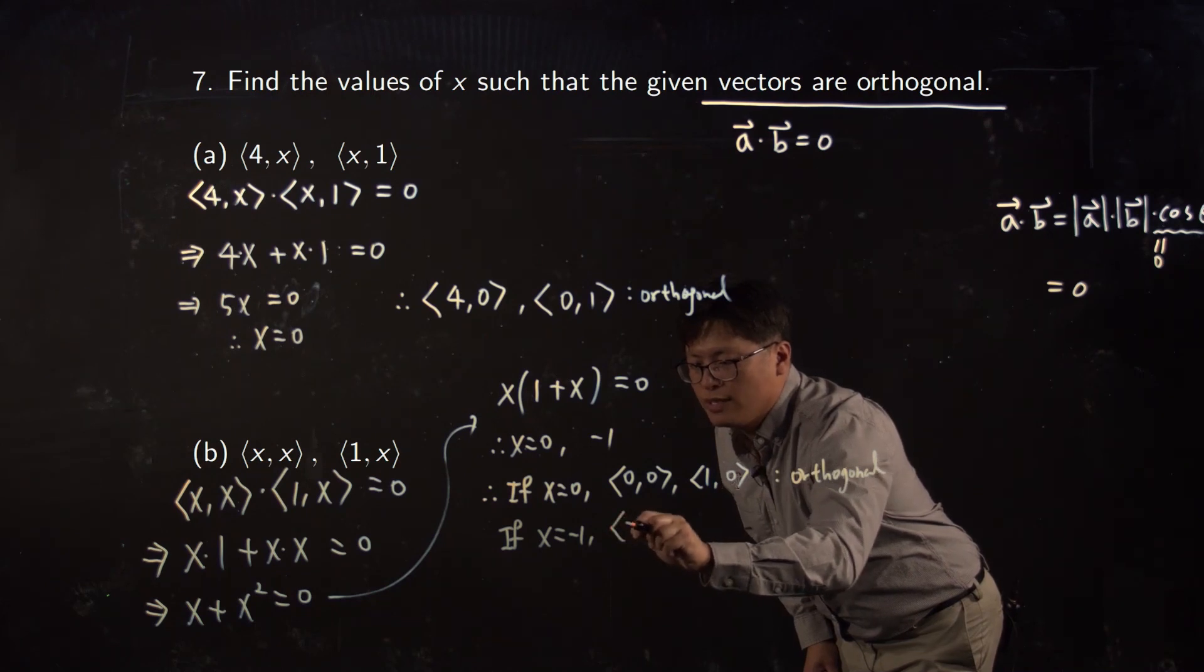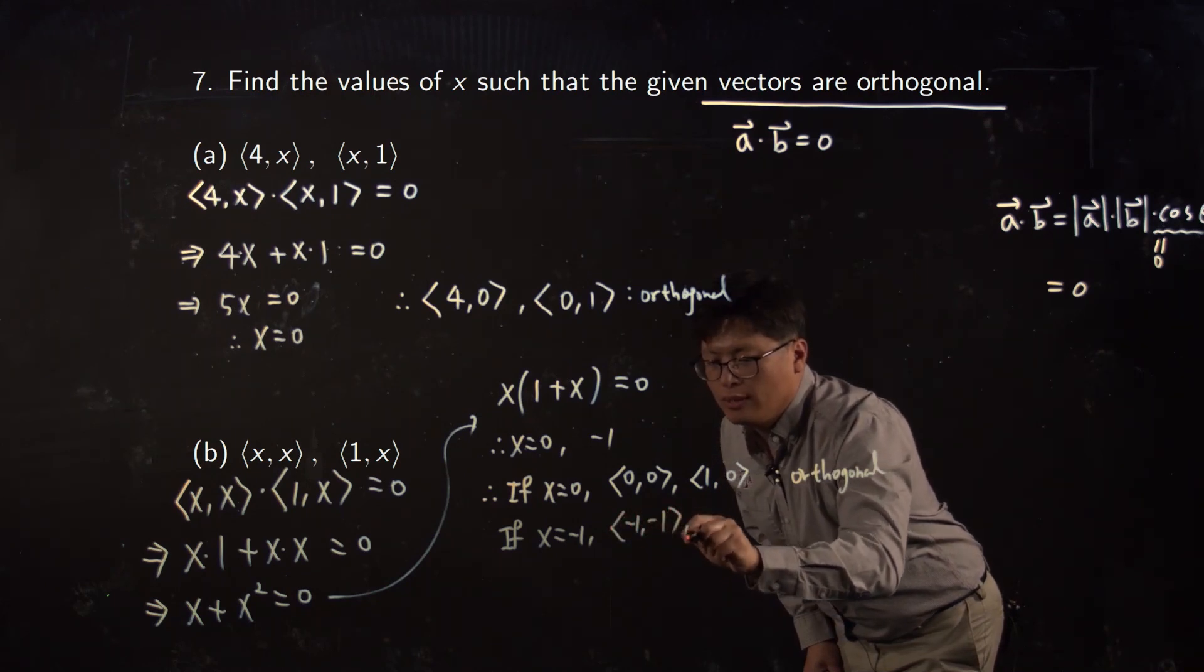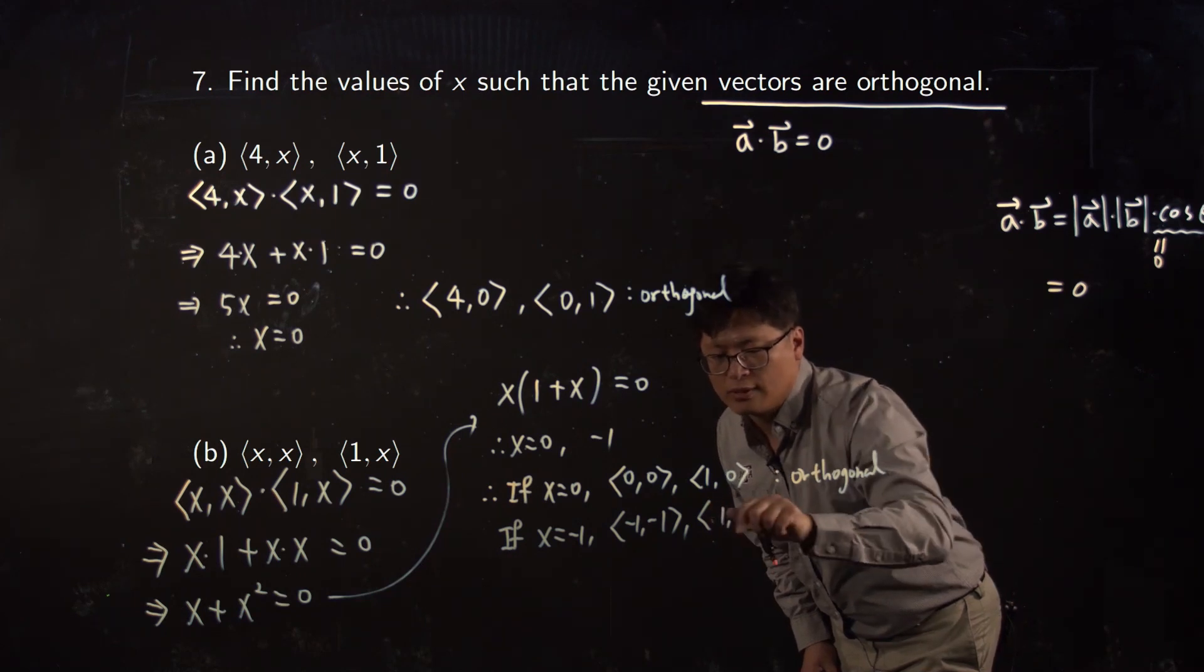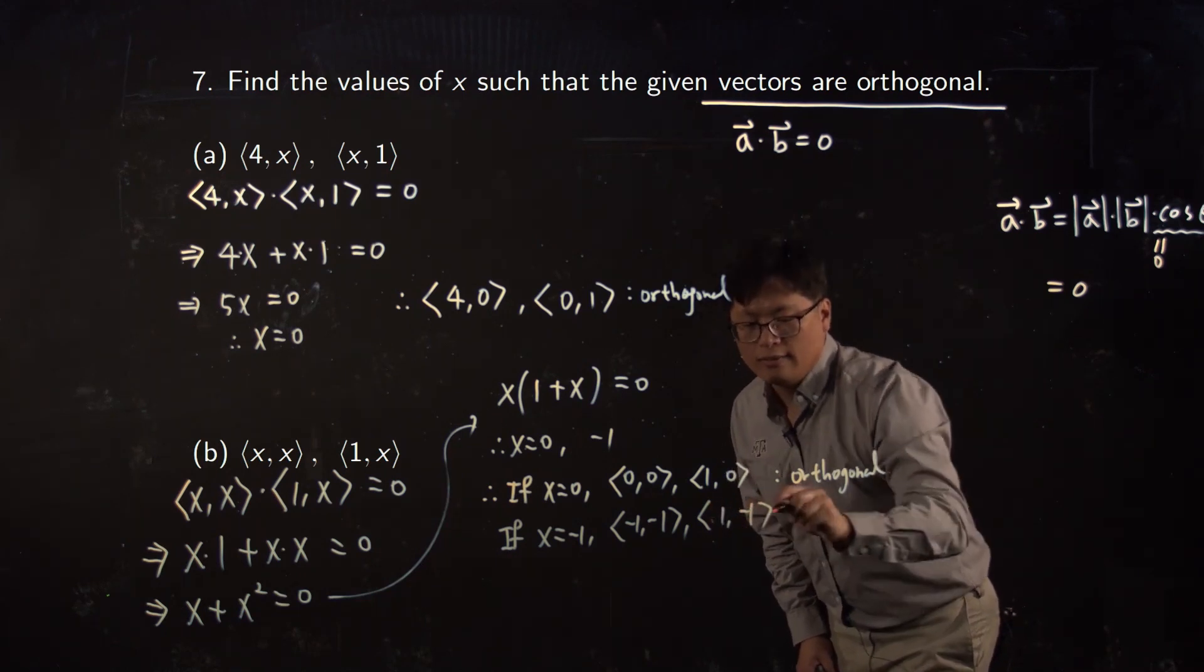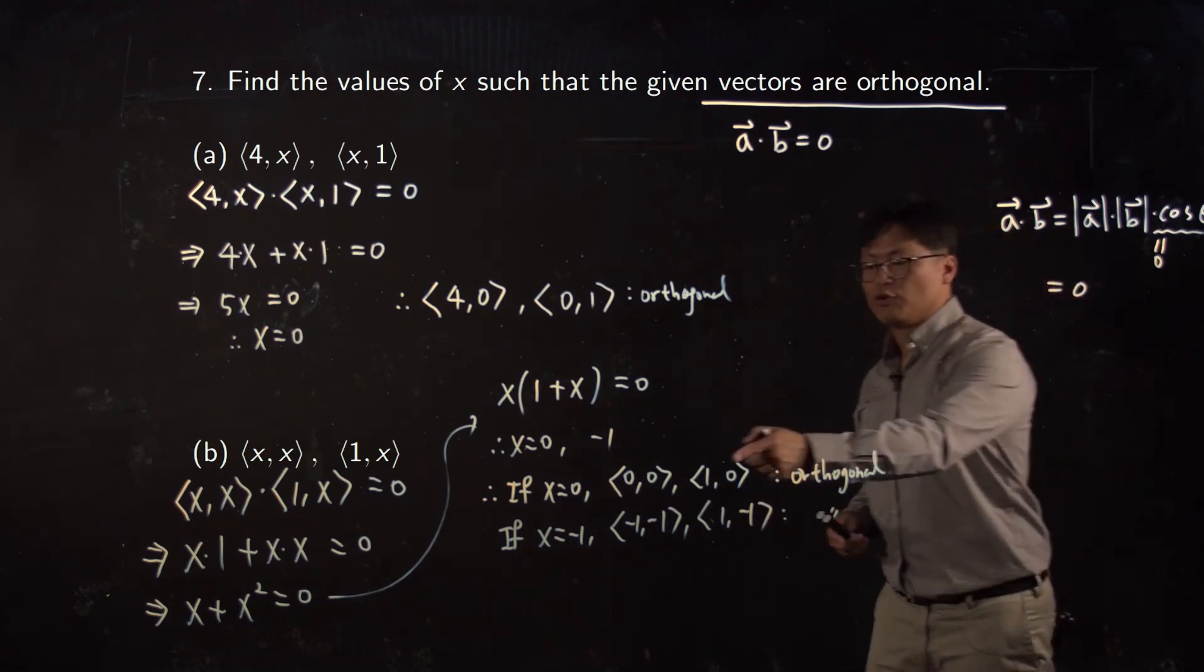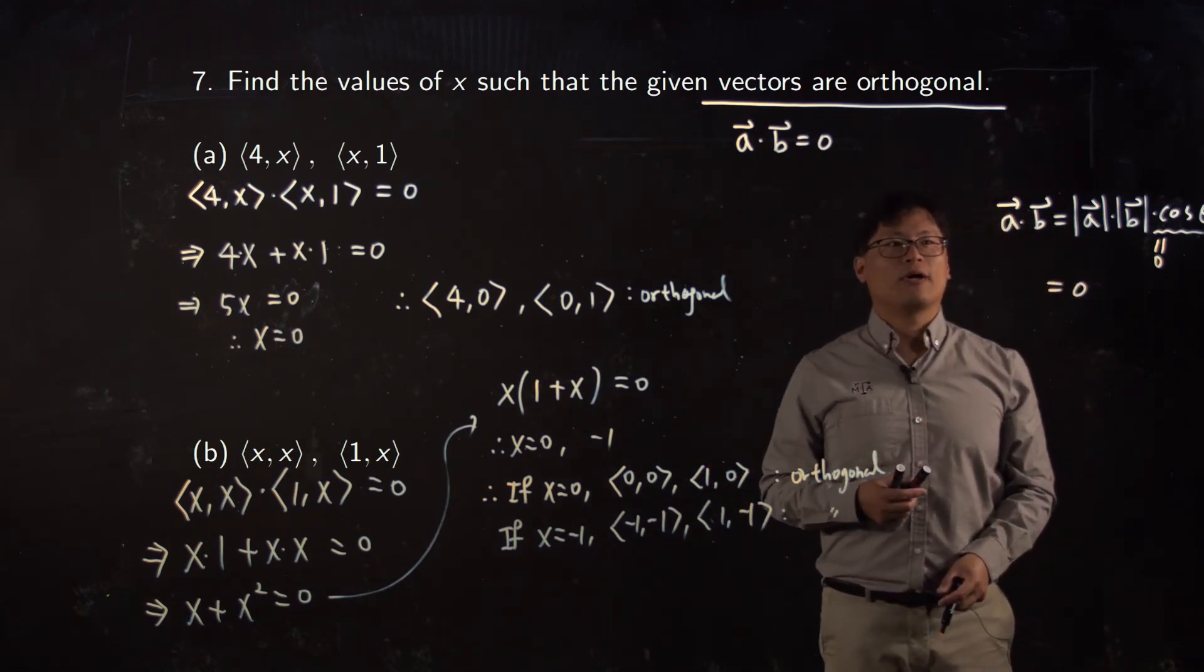Negative one, which is (-1, -1) and (1, -1). They are also orthogonal, right? So can you make it? You can draw the vector of this one, then you can find they are orthogonal.